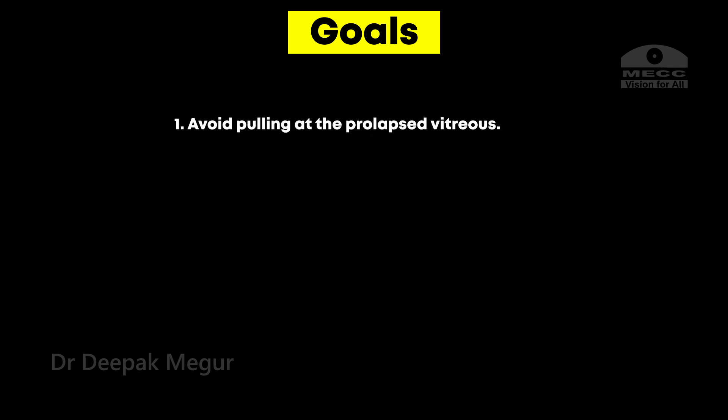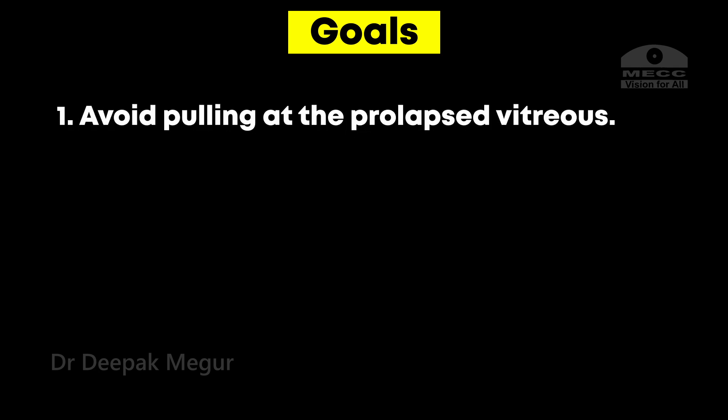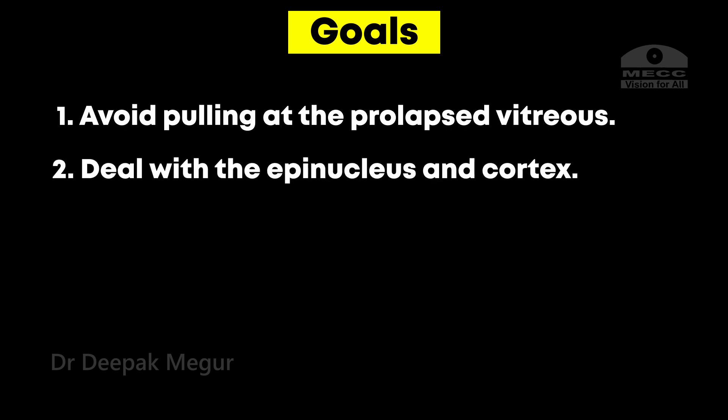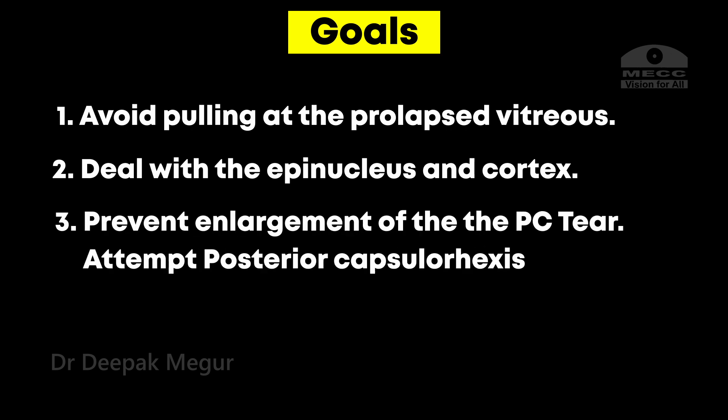Number one — probably the most important — is to avoid any pulling at the prolapsed vitreous. This will prevent any traction at the vitreous base. For this I need to diagnose the vitreous prolapse, identify it, and deal with it by doing anterior vitrectomy. Number two would be to deal with the lens matter and the cortex. Number three would be to prevent enlargement of the PC tear and attempt a posterior polar capsulorrhexis if possible. And lastly, place the intraocular lens.